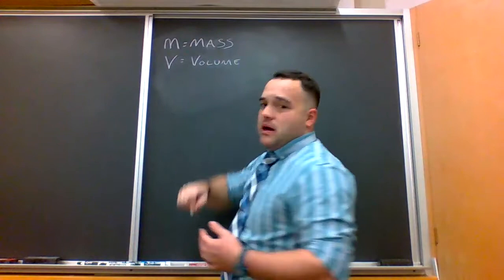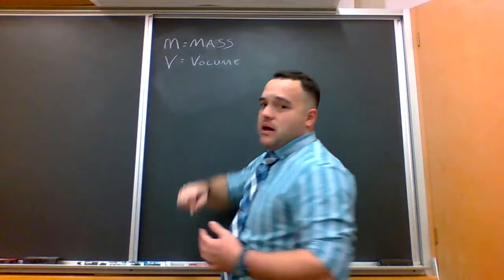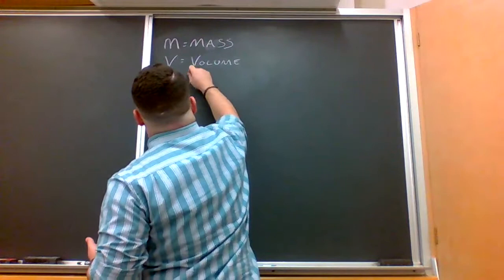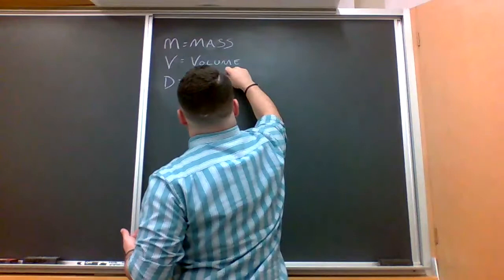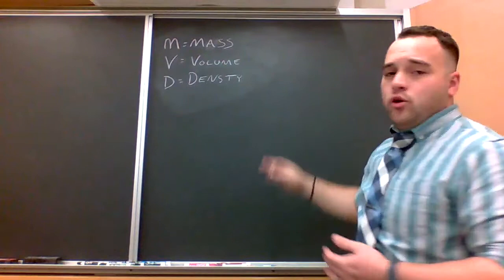V is for volume, which is the amount of space that an object takes up. And D is for density, or how much stuff is in a certain amount of space.